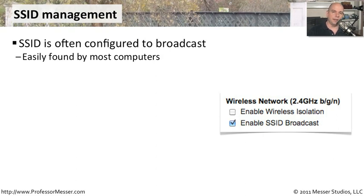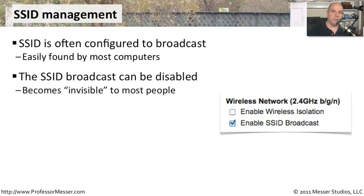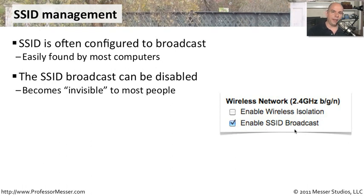Because SSIDs are being broadcast out, it's really easy to see a list of them in a particular application, in your operating system, or in a specialized analysis program like Kismac. Most of the time, you want your end users to be able to see your access point very easily. But this broadcast feature can be disabled — you might want to turn it off so that it generally becomes invisible to most people, by enabling or disabling the SSID broadcast right in the configuration of your access point.